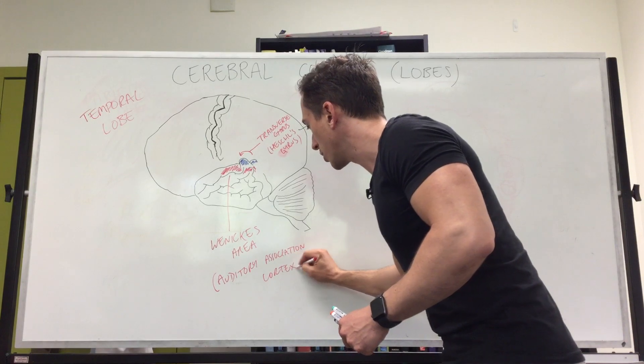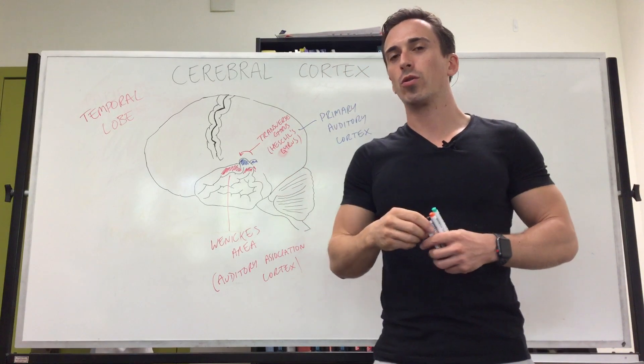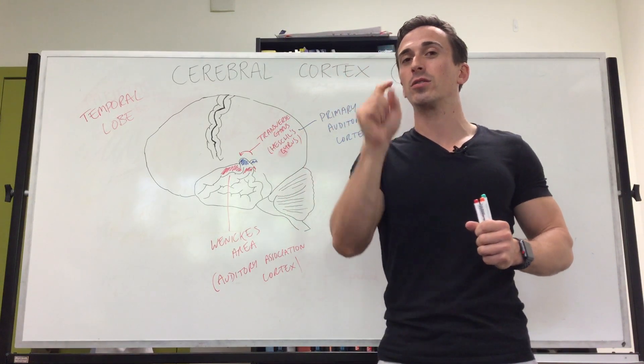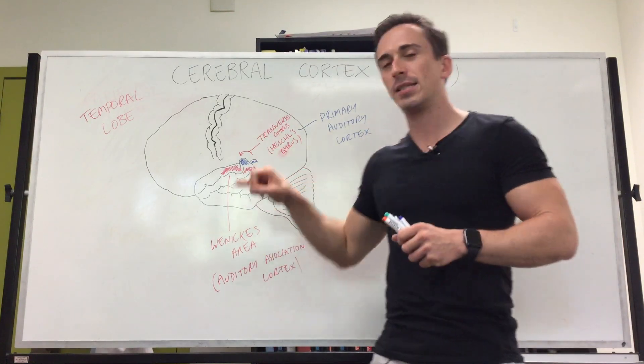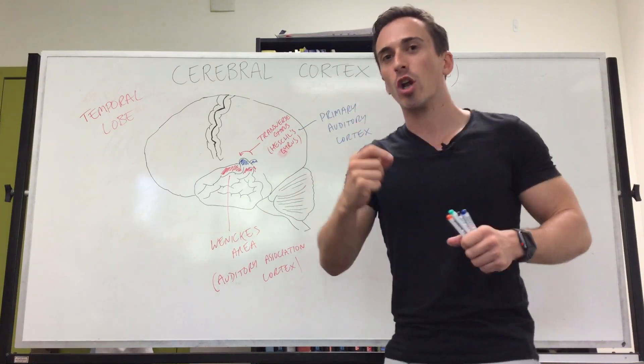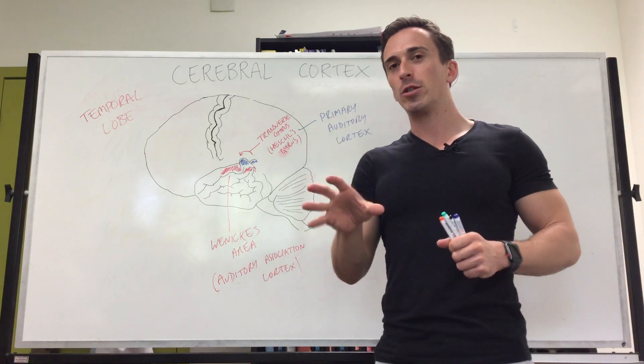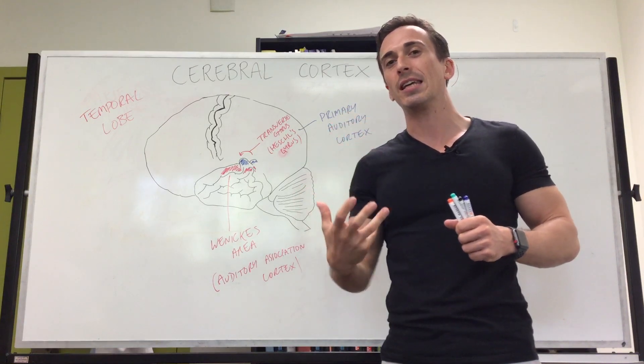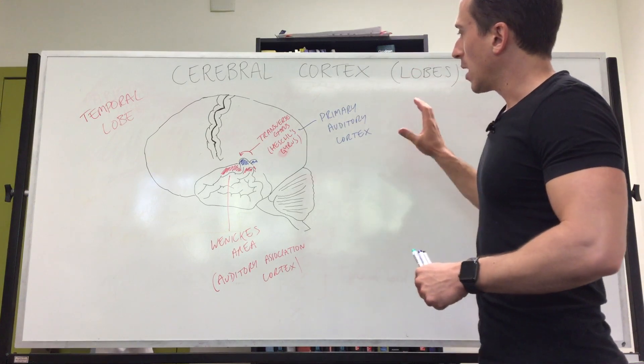When you hear a sound, it goes to the primary auditory cortex and you just hear the sound. When that sound makes sense to you, it's because it's gone to the association cortex, Wernicke's area. Damage to Wernicke's area can result in issues with comprehension of speech and language. This is very important.